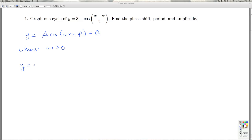So I get a minus 1 cosine, and then I'm going to distribute this 1 half through, 1 half x minus pi over 2 plus 3.